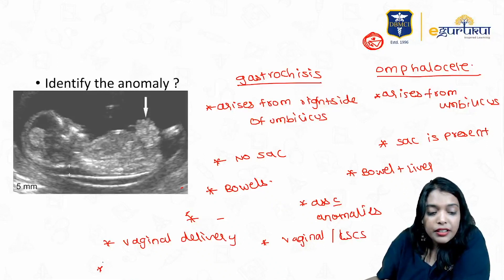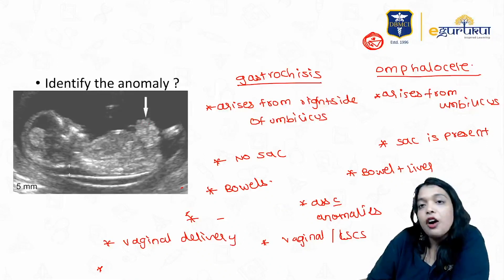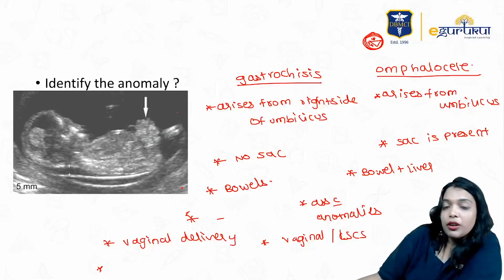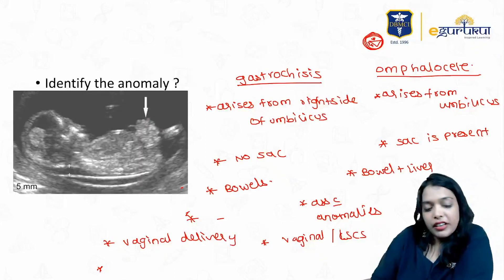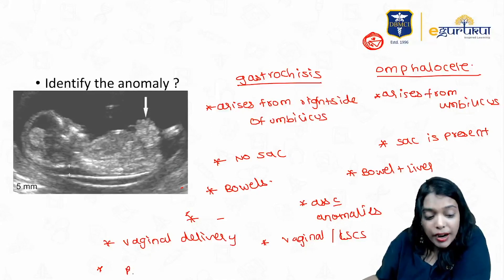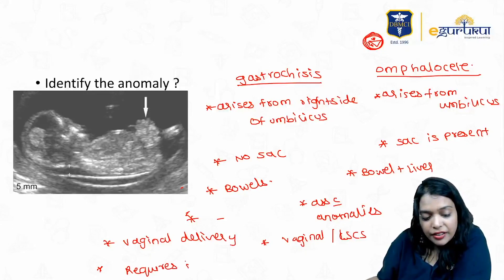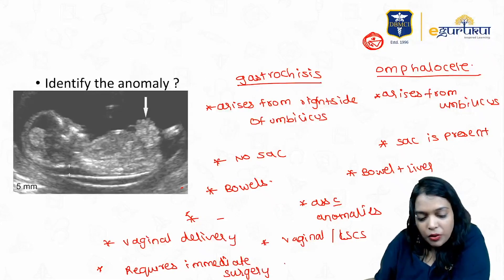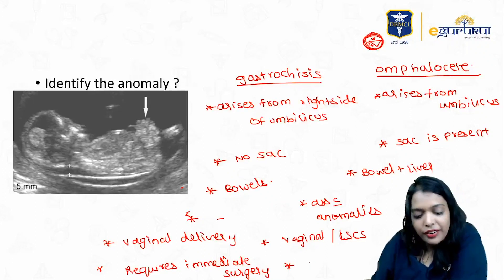In gastroschisis, as the bowels are outside, prognosis depends on how much bowel is damaged and how much gangrenous part is there. Gastroschisis requires immediate surgery after the baby is born. Omphalocele, on the other hand — we can wait.